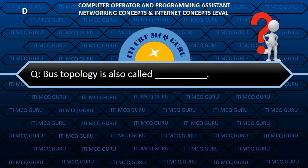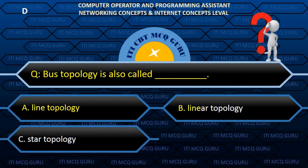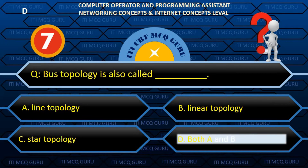Bus topology is also called: D. Both A and B.